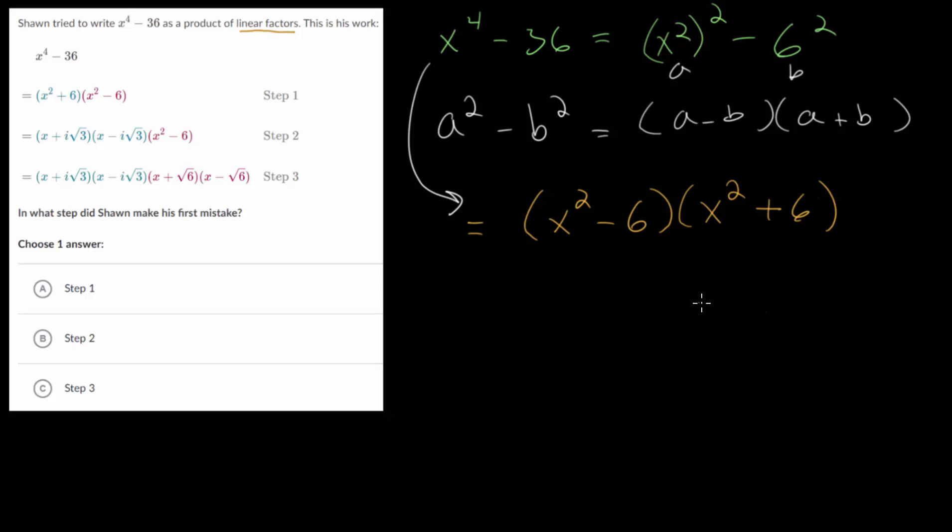Now at this point, we can continue factoring. We again have a difference of squares here—you just have to recognize that six can be rewritten as the square root of six squared. And we can again apply that formula there. Now for this second expression, this is a sum of two squares, where again you would write six as the square root of six squared. And for a sum of two squares, we need imaginary numbers.